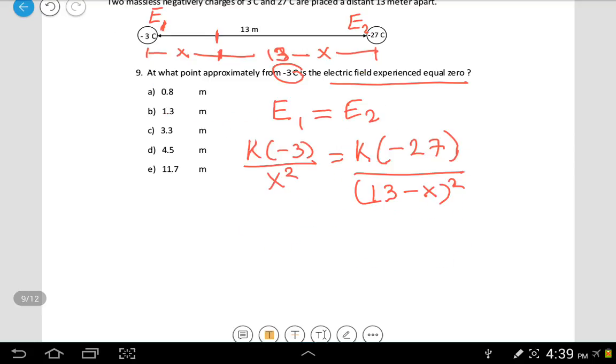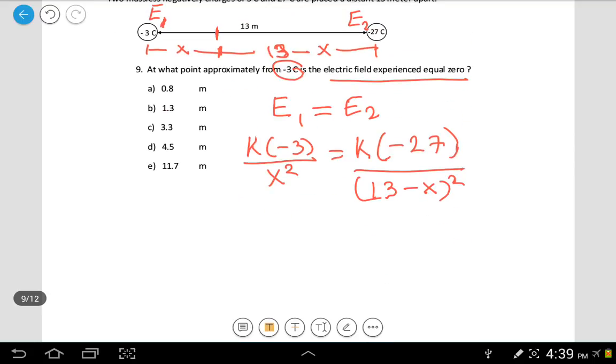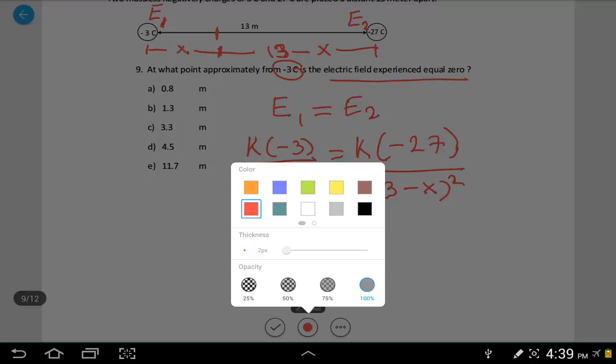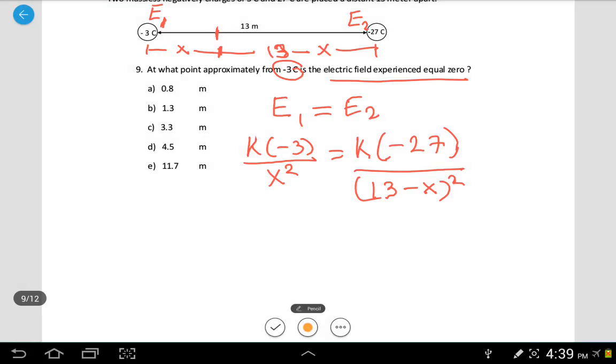Now what we would like to do is cancel the K. Both sides, you can get rid of the K. K and the K cancels out. Now we can cancel the negative as well. We can divide both sides by 3 and cross multiply. Divide both sides by 3, you're left with 9 on top on the right side. Cross multiply, you're getting 13 minus x squared equals 9 times x squared.